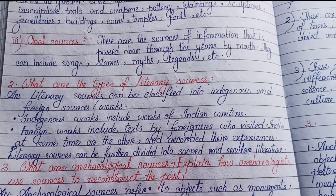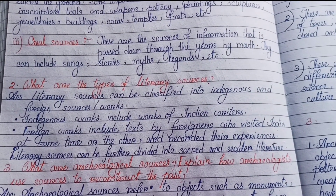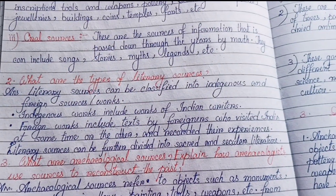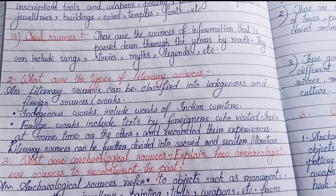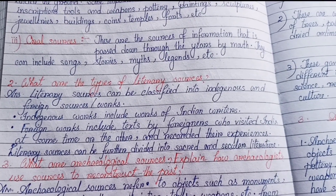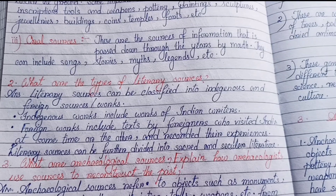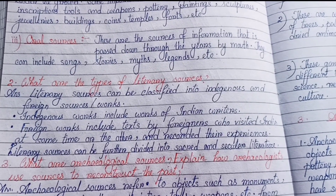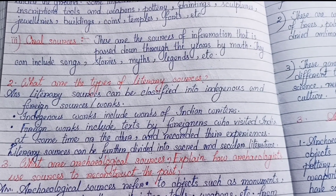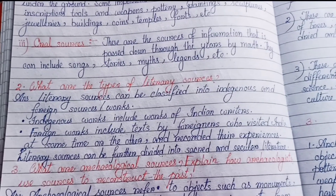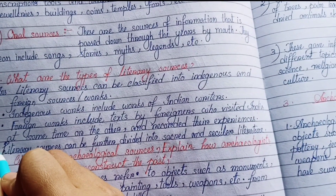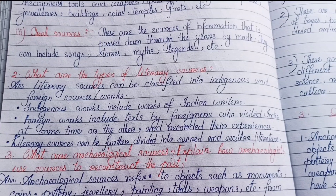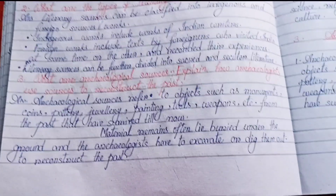Section F, Number two: what are the types of literary sources? Literary sources can be classified into indigenous and foreign sources. Indigenous works include works of Indian writers. Foreign works include texts by foreigners who visited India and recorded their experiences. Literary sources can be further divided into sacred and secular literature.